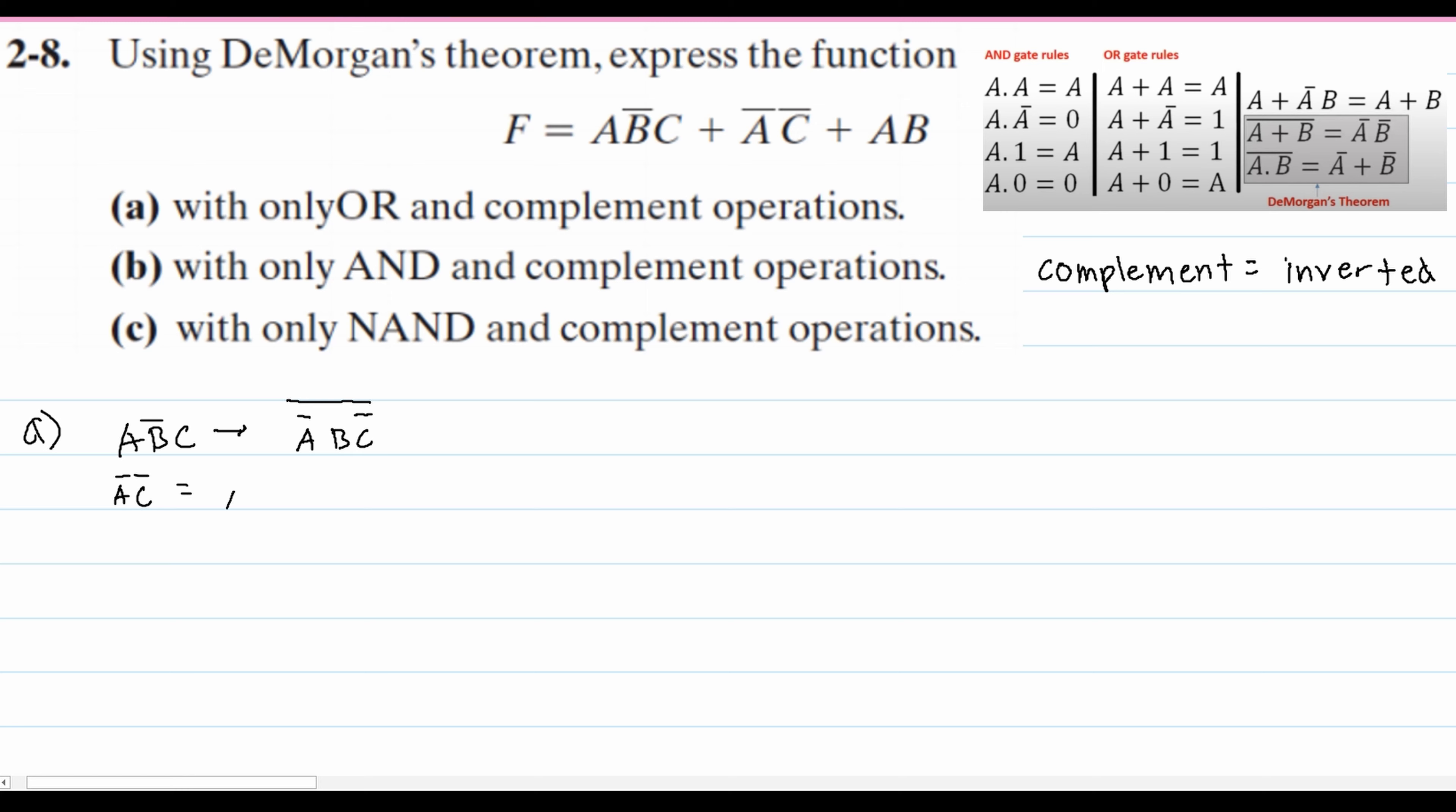So we're going to rewrite this as A + C with a not operator over it. This is what we have, and we can add it into our overall equation.